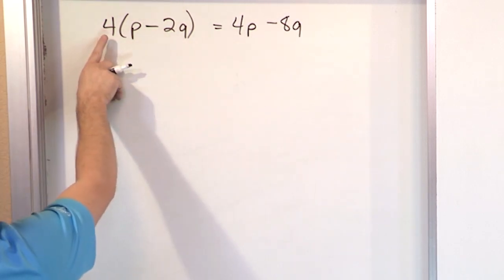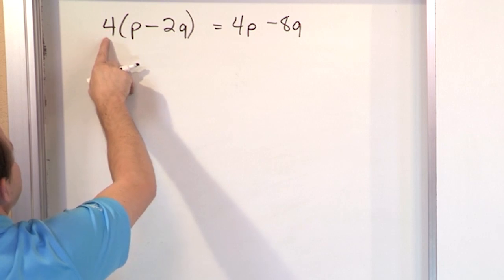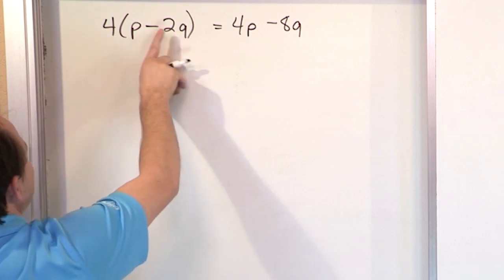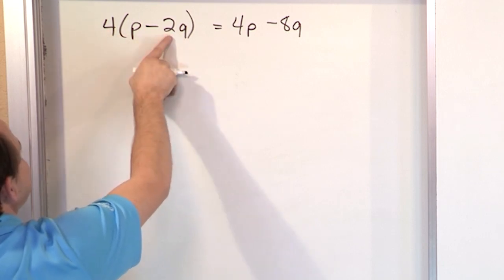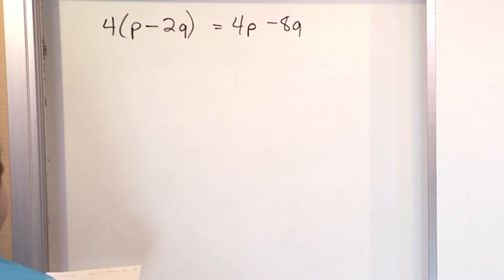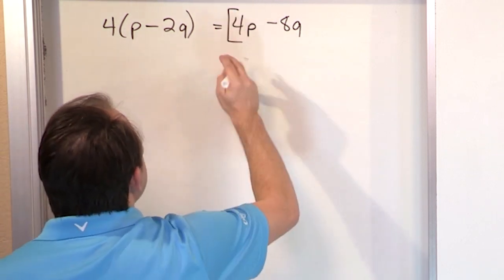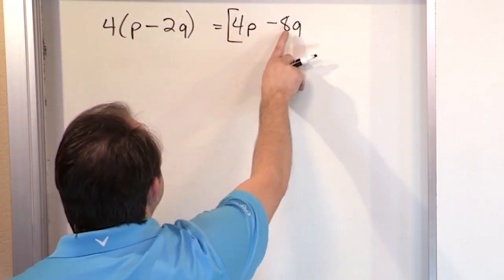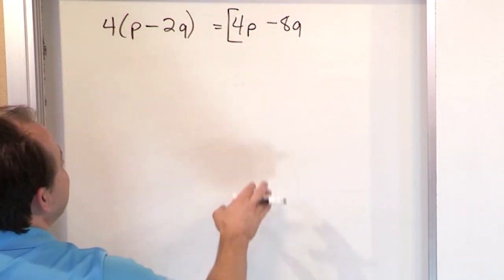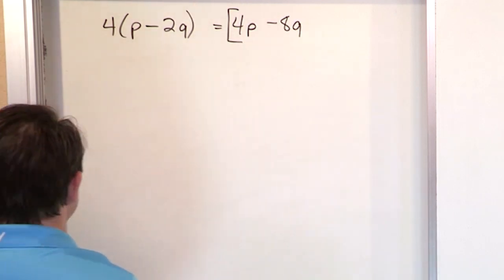Another way to think of it: 4 times p is 4p. 4 times negative 2 — remember, positive times negative gives you negative 8 — and then the q comes along for the ride. So you get 4p minus 8q. You can't add these any further because they have different variables. They're unlike terms.